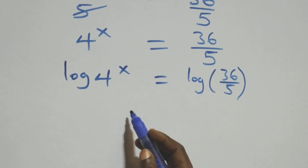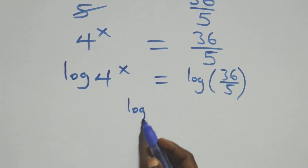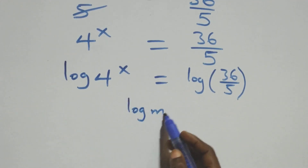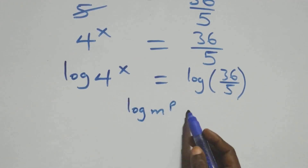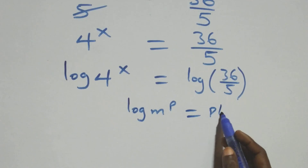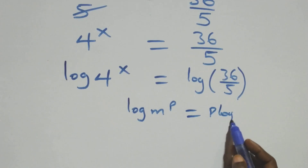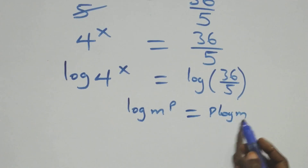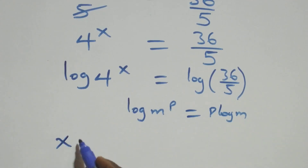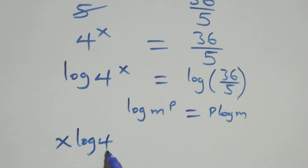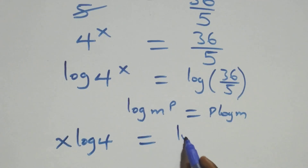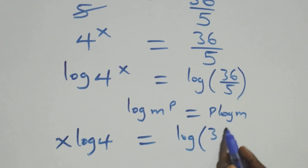We apply the power rule of logarithms. When we have log n raised to power p, this is the same thing as p log n. So all we have becomes x log 4 equals log of 36 over 5.